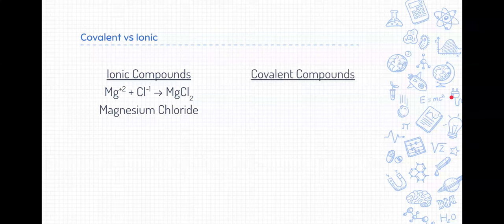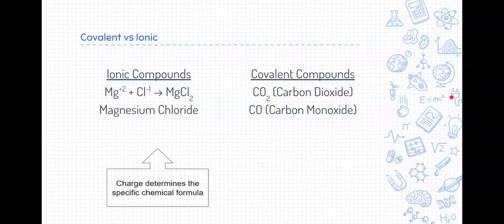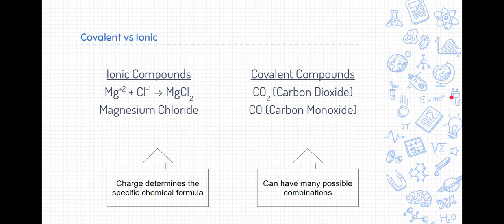Now covalent compounds work a little bit differently. Here are two examples of covalent compounds you're probably familiar with. The first one, CO2, is carbon dioxide and the second one, CO, is carbon monoxide. Notice between the two, ionic compounds are pretty predictable. Their charge determines a very specific chemical formula and their names are very straightforward. Covalent compounds, on the other hand, have many possible combinations of those same two elements. So how do we name them?